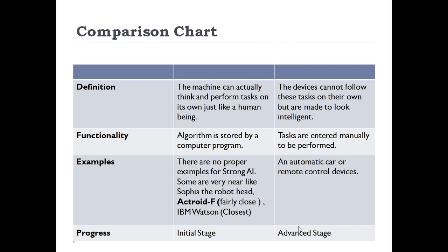Now let's see the comparison chart. Definition-wise: in strong AI, machines can actually think and perform tasks on their own like human beings. While in weak AI, devices cannot perform these tasks on their own but are made to look intelligent. Functionality-wise: in strong AI, the algorithms are stored by the computer program itself, while in weak AI, tasks or algorithms are entered manually by a programmer or expert person.